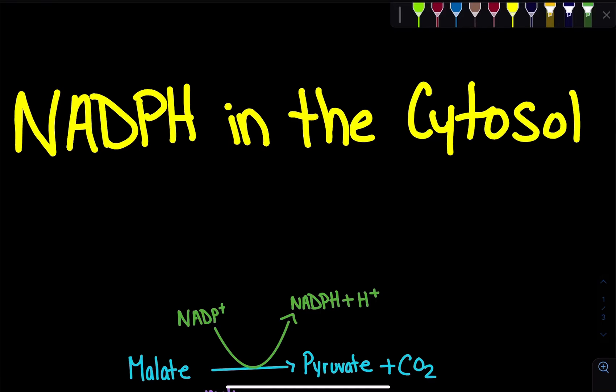Since many cellular processes occur in the cytosol, anabolic processes often require NADPH. For example, in fatty acid synthesis, we require NADPH for each round where we add a two-carbon unit onto the growing fatty acid chain. The question is: how do we get NADPH in the cytosol? Glycolysis occurs in the cytosol and produces NADH, which is used in the electron transport chain — but how do we get NADPH for anabolic processes such as fatty acid synthesis?